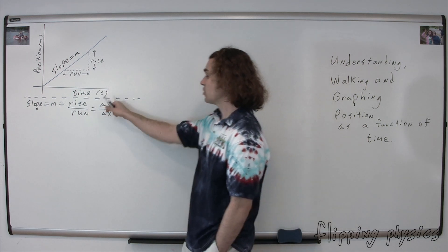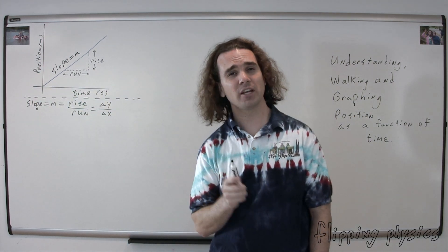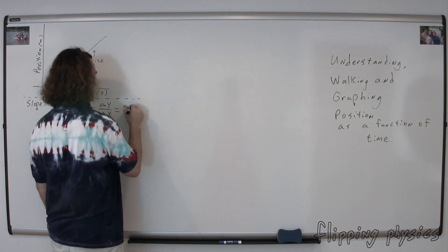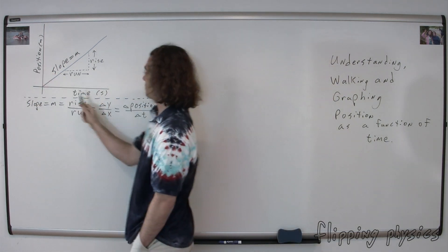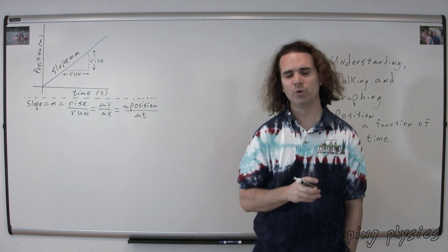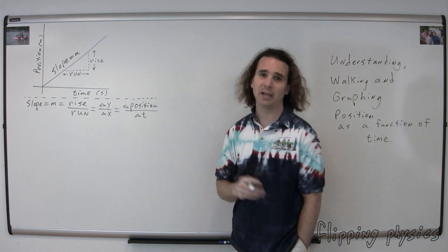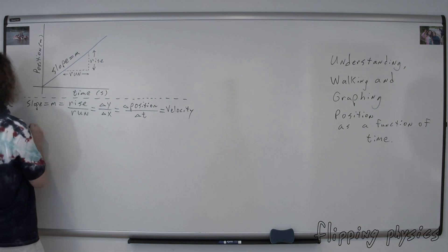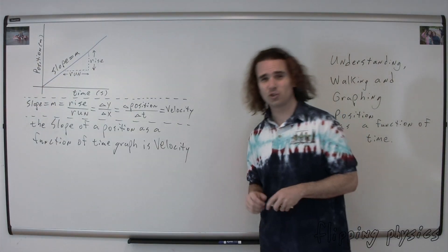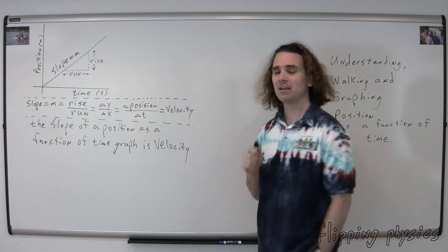But we don't have a y-axis and we don't have an x-axis. We have, instead of a y-axis, a position axis. Instead of an x-axis, we have a time axis. So instead of slope equals change in y over change in x, it's going to be the change in position over the change in time. In other words, the slope of a position versus time graph is equal to the change in position over change in time. That sounds really familiar — anybody have any idea what that is? Velocity. That's right. Displacement over change in time is equal to velocity. One thing that you absolutely have to know is that the slope of a position versus time graph is velocity.